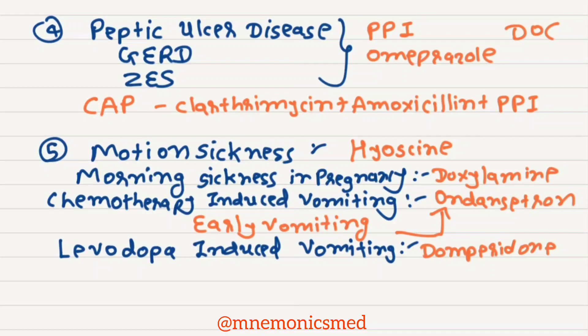For chemotherapy-induced or early vomiting, drug of choice is Ondansetron. For levodopa-induced vomiting, drug of choice is Domperidone.